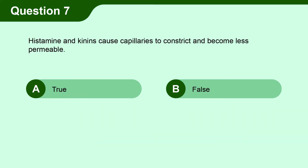Question 7. Histamine and kinins cause capillaries to constrict and become less permeable. A. True. B. False.